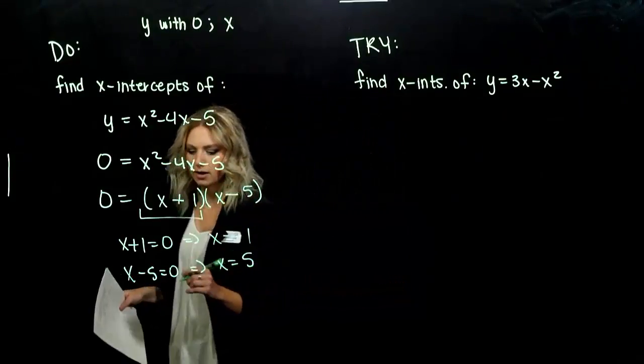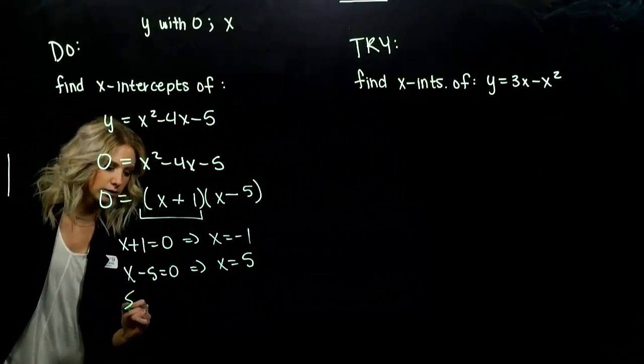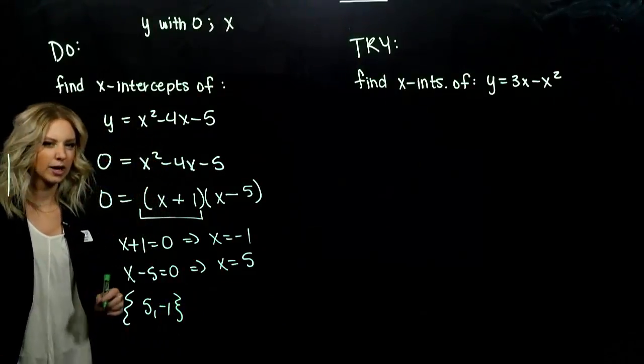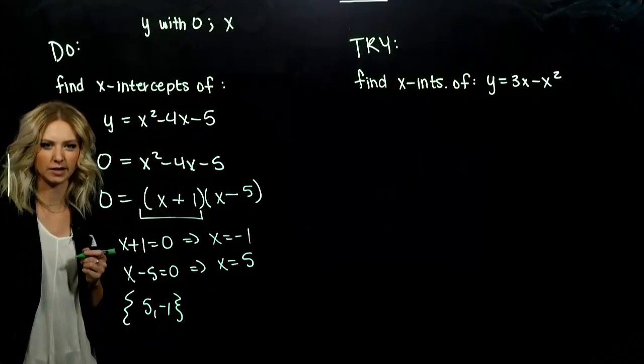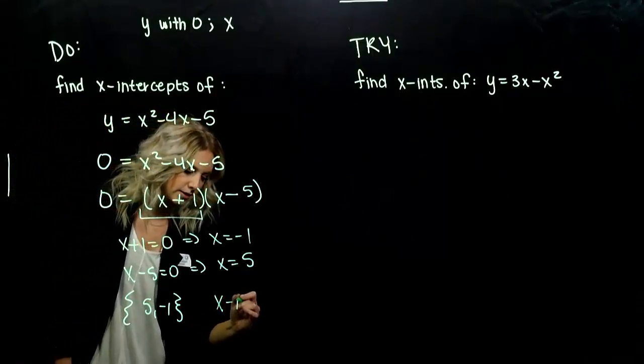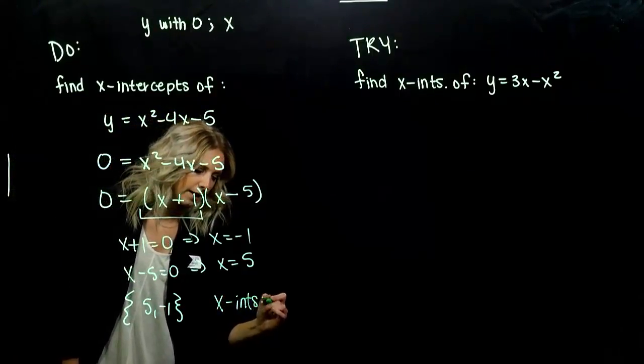So yes, our solution set to this equation is 5, negative 1, but to actually report the x-intercepts, they happen at points. So where are those x-intercepts occurring at? What point?